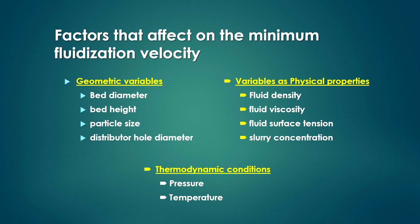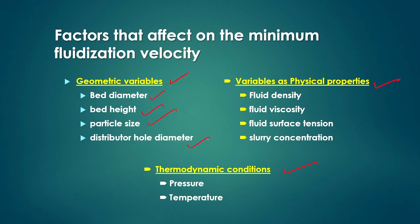We can calculate minimum fluidization velocity once we know particle diameter, minimum void fraction, and other physical properties. Three types of variables affect minimum fluidization velocity: geometric variables (bed diameter, bed height, particle size, distributor hole diameter), physical property variables (fluid density, fluid viscosity, fluid surface tension, slurry concentration), and thermodynamic conditions (pressure and temperature).